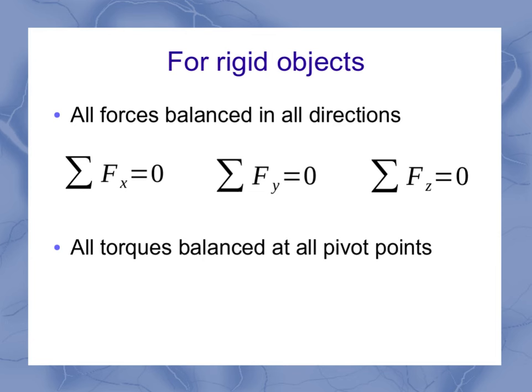Also for rigid objects, all torques have to be balanced at all pivot points. When we start solving problems, you'll see how this can be very helpful. But in terms of an equation, it's the sum of the torques has to be equal to 0.